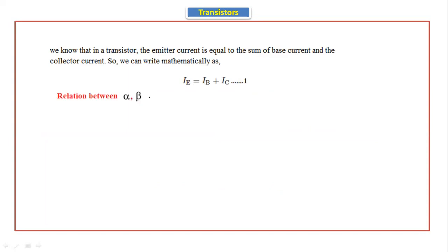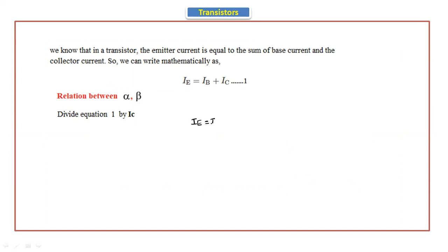Now the relation between alpha and beta — to get this we have to divide equation number one by IC. Equation number one is IE equals IB plus IC. We divide this equation with IC to get the relation between alpha and beta.